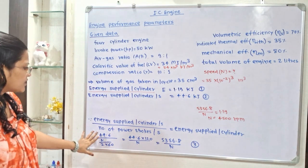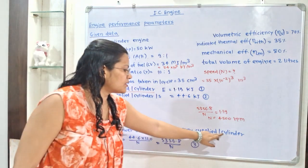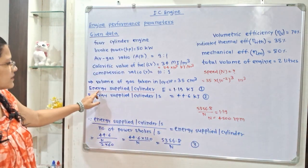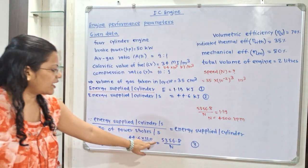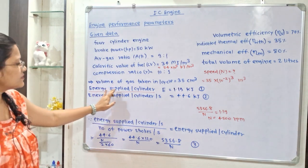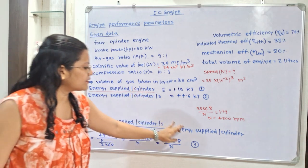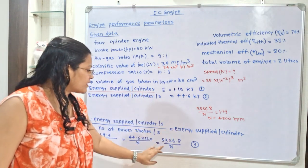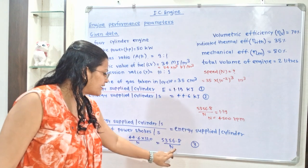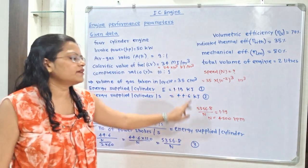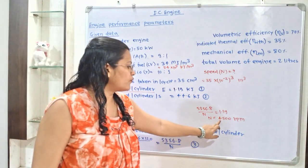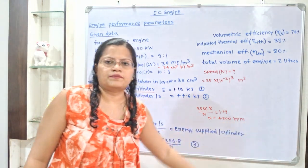Comparing equation 1 (E = 1.19 kJ) and equation 3 (E = 5356.8 / n): 5356.8 / n = 1.19. Therefore, n = 5356.8 / 1.19 ≈ 4500 rpm. This is the required speed of the engine.